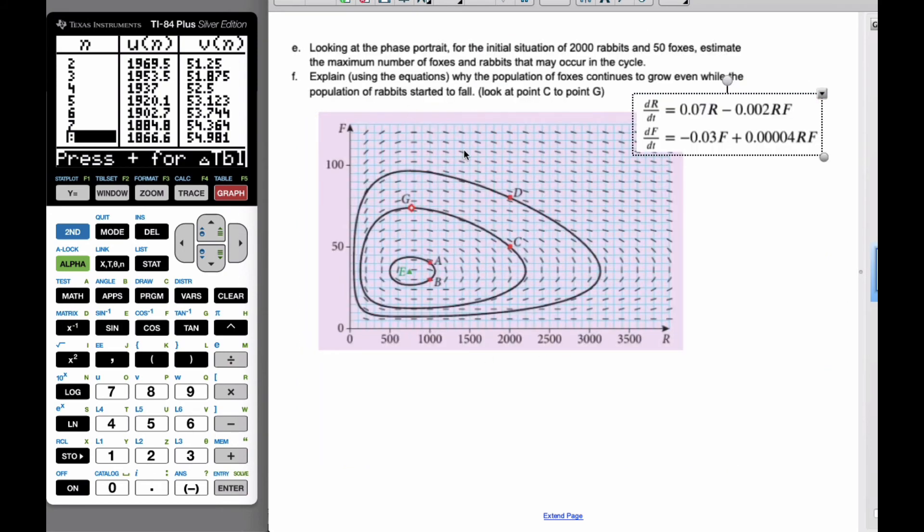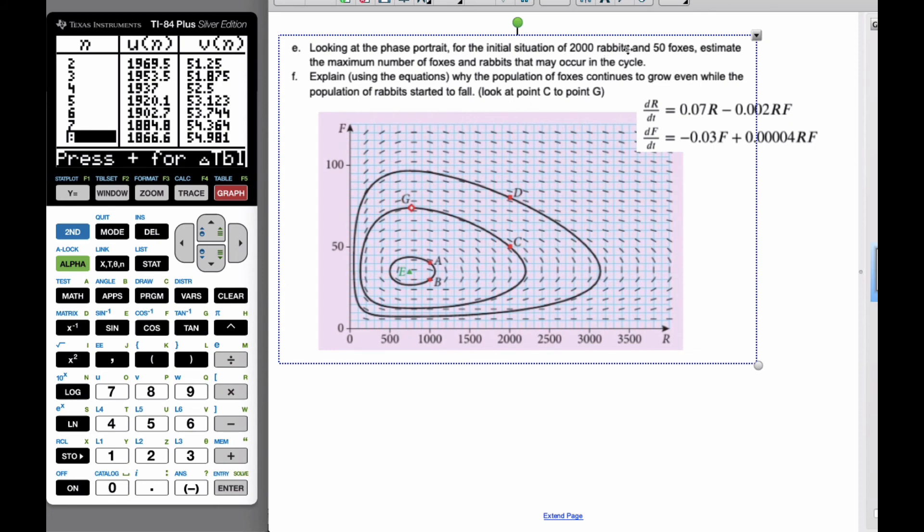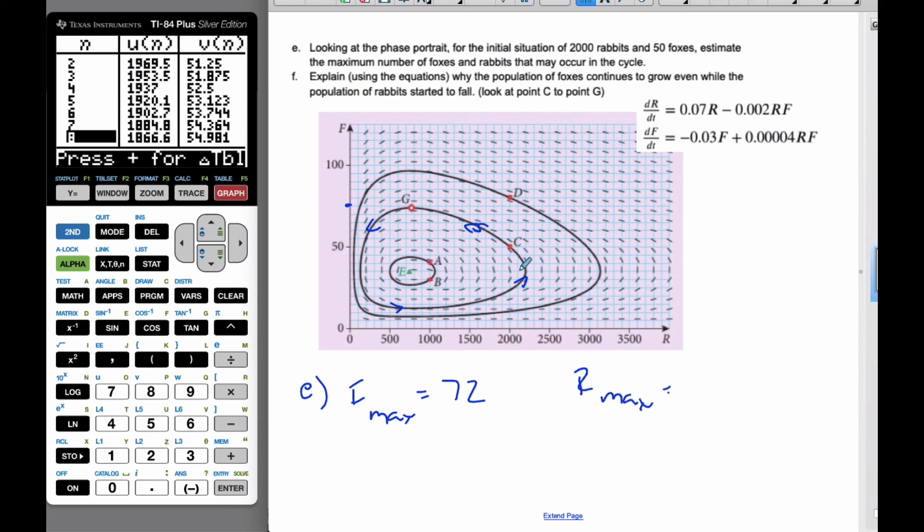Finally, moving on to the last two parts, looking at the phase portrait. For the initial situation of 2050, estimate the maximum number of foxes and rabbits that may occur in a cycle. Well, the fox maximum, if I look at this middle graph here, which is going in this direction here, my maximum foxes ends up being here, at this point G, which is going to be about 70, 75. So it's going to be about 72. And my maximum rabbits in this cycle is going to be out here. So that's going to be about 2200 rabbits. And granted, these phase portraits are really good estimates, and so they don't have to be exactly precise, but you have to do a reasonable job of estimating.